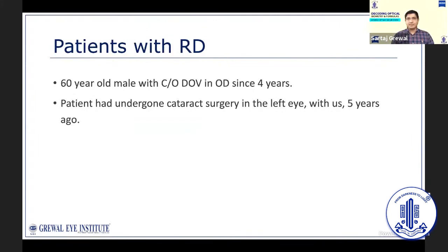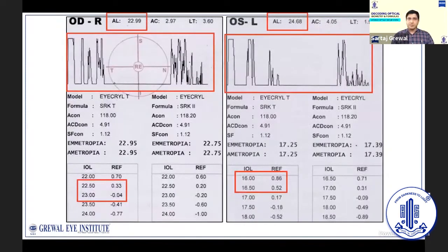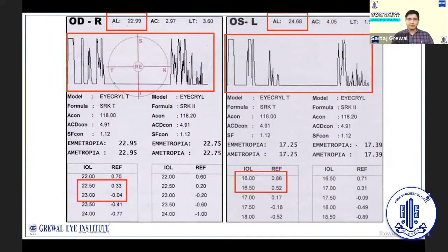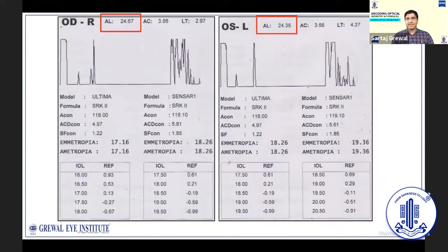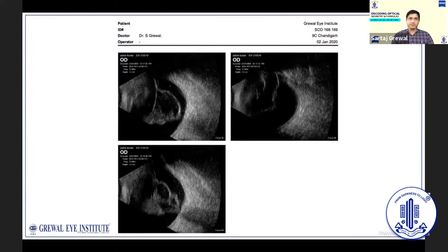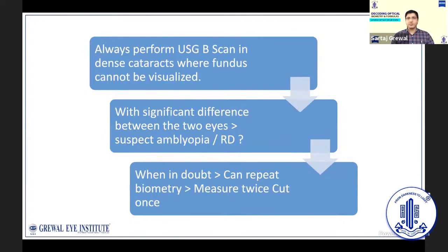Sometimes patients with dense cataracts or poor fixation necessitate ultrasound A-scan. A patient with a very dense cataract who had undergone cataract surgery in the left eye five years prior showed a significant difference in axial length between the two eyes with very different amplitude spikes in the right eye. Review of older biometry from four years earlier showed the axial lengths were similar at that time — highlighting the importance of bilateral biometry and good record keeping. An ultrasound B-scan showed the presence of a retinal detachment. Whenever the fundus cannot be visualized, it is crucial to perform an ultrasound B-scan. Always check measurements in the contralateral eye, be suspicious when there is a significant difference, and repeat the biometry when in doubt. Remember: measure twice, cut once.